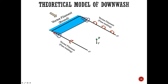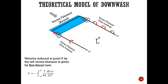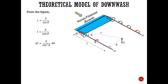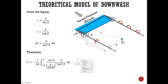Last time in class we left off with this mathematical model for downwash. We started with the Biot-Savart law, which predicts the velocity distribution induced by a vortex filament that extends to infinity. By definition of the cross product, the Biot-Savart law reduces to a simpler expression. We then converted to polar coordinates to make integration easier, and solving that integral gives gamma over 4π·h.